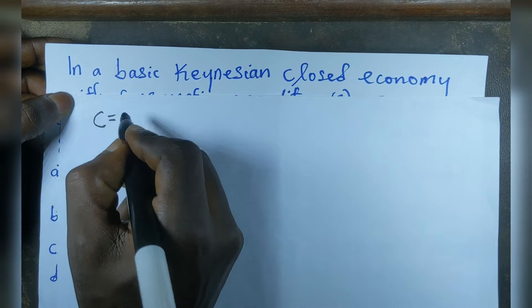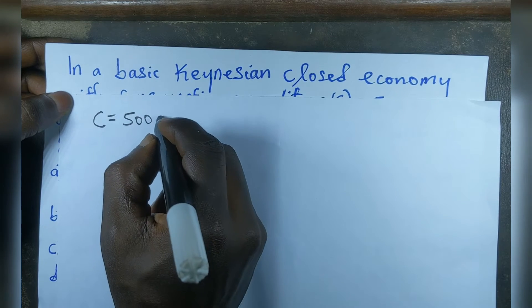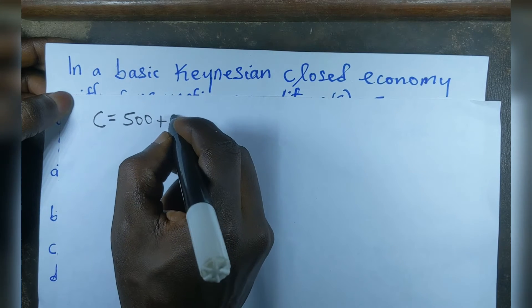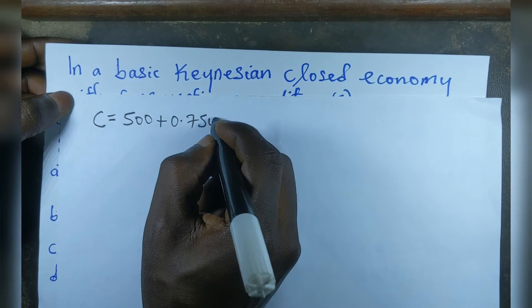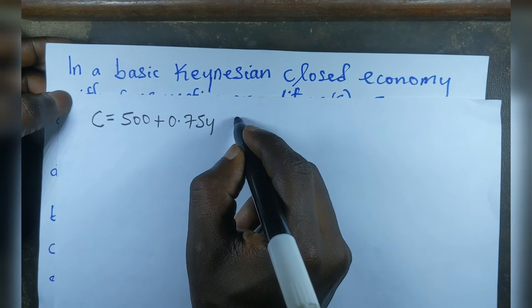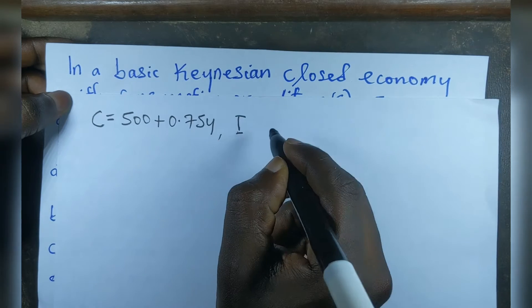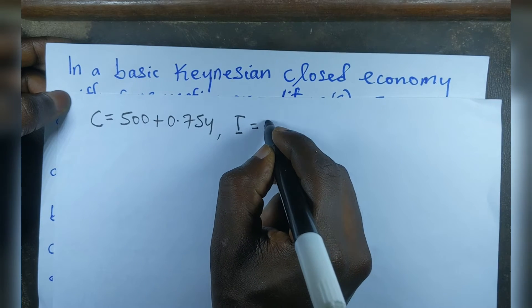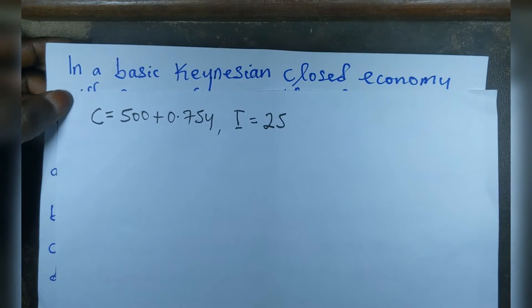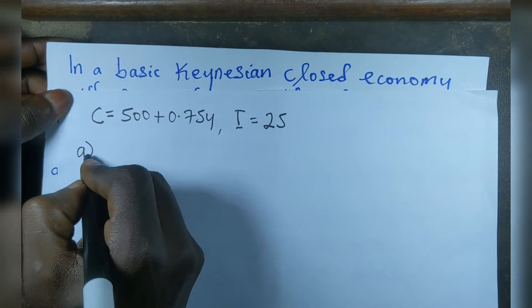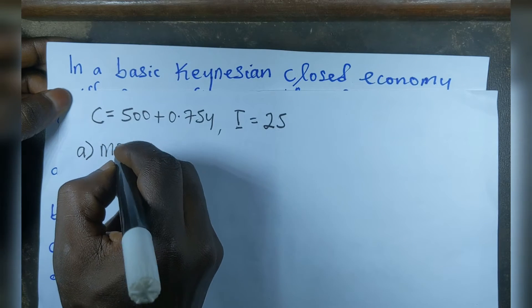Given that the consumption function C equals 500 plus 0.75Y and the investment expenditure I equals 25. Part A says that we should determine MPC.